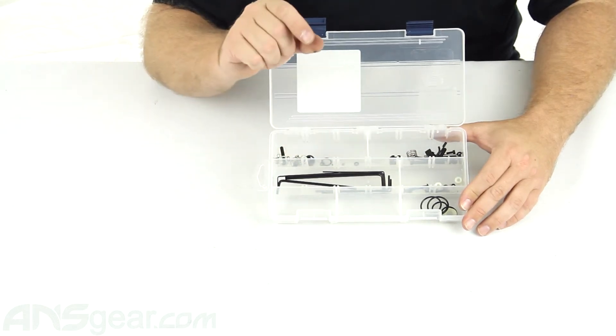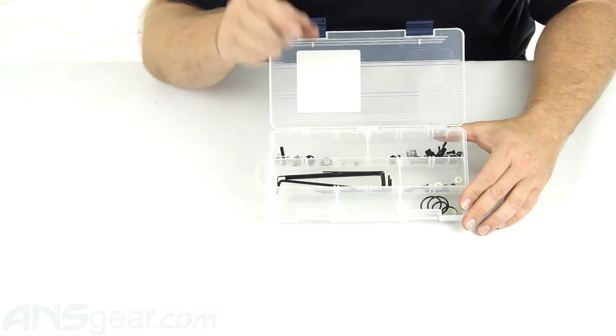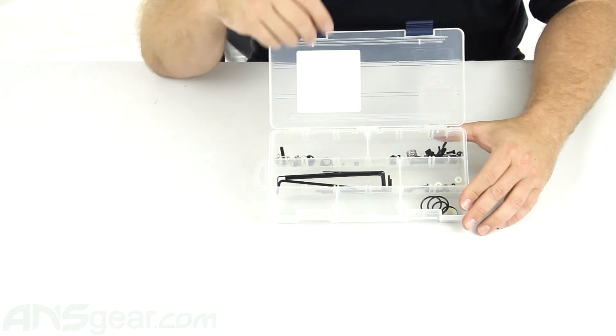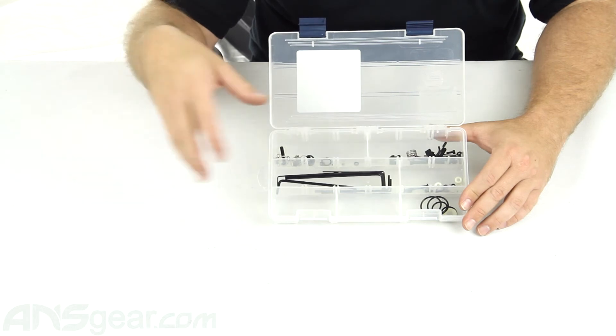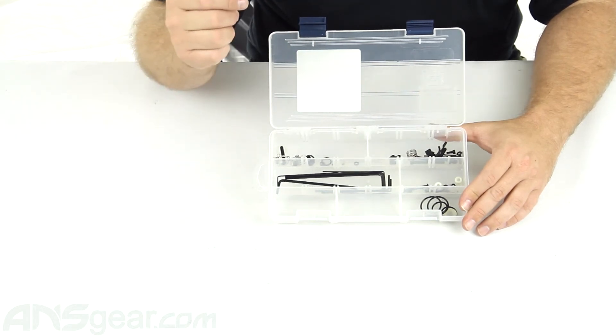But it's nice to have a set of, especially the smaller O-rings. Especially in the Tiberius guns, there's a lot of smaller O-rings in there that are harder to find just going to pick up some O-rings at the hardware store.